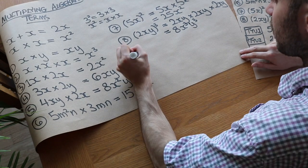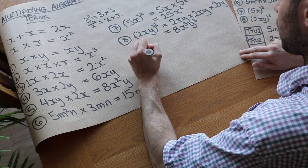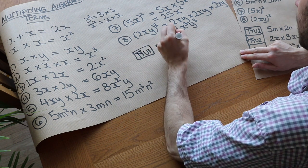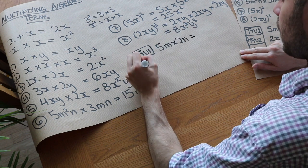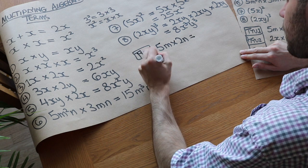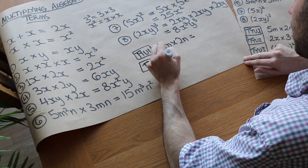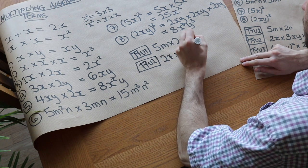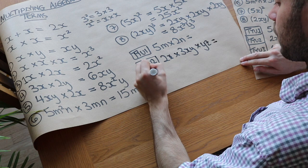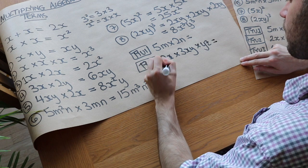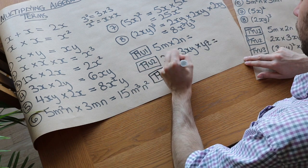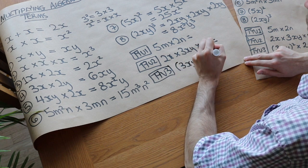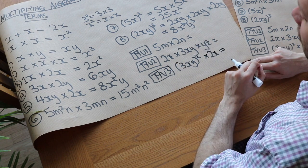Now let's do some test your understanding questions. You've got these questions here. So you've firstly got 5m times 2n. Then you've got 2x times 3xy times yz. And then finally, as a slightly harder one, we've got 3xy squared times by 2x. So you may want to pause the video now to have a go at those.